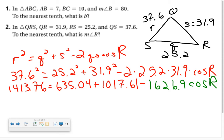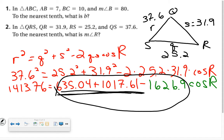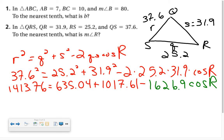Continuing to simplify, again, I can't stress this to you enough. Put your pencil down. These are not like terms. You can't combine them all. What you are allowed to combine is this. Okay, so pick your pencil back up. And let's combine those two like terms. So 635.04 plus 1017.61. Okay, so 1413.76 equals 1652.65 minus 1626.9 times the cosine of R.